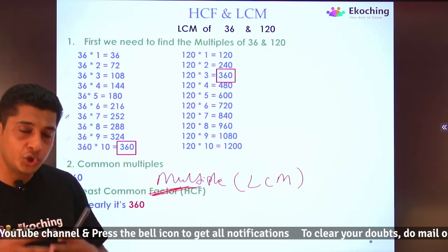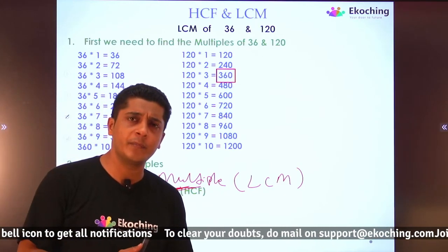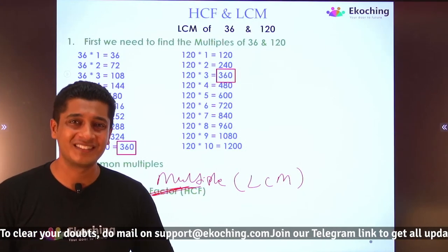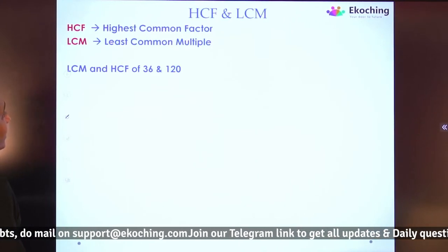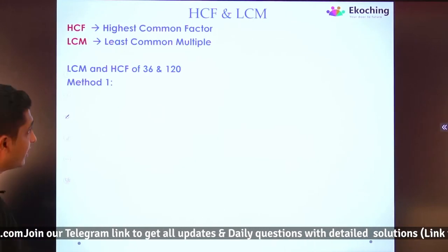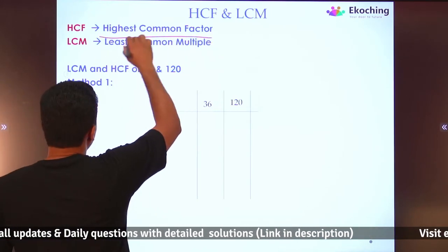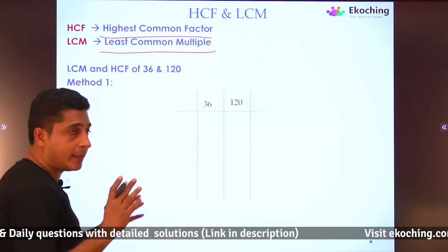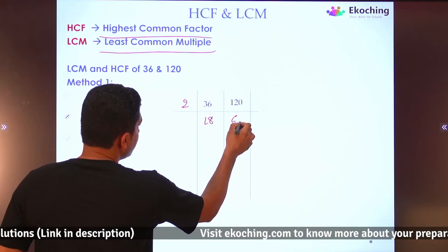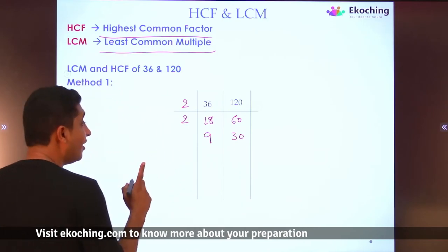These are the two basic concepts: HCF and LCM. There are multiple methods to find them, but this is the basic concept. Let's go to the next part — method one. We start dividing. I will divide 36 and 120 by 2, getting 18 and 60.